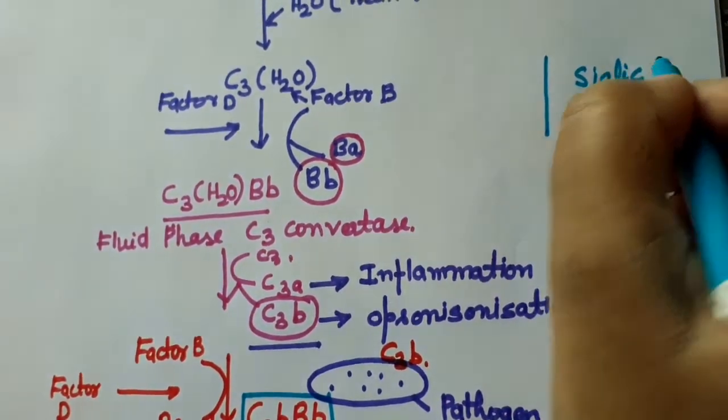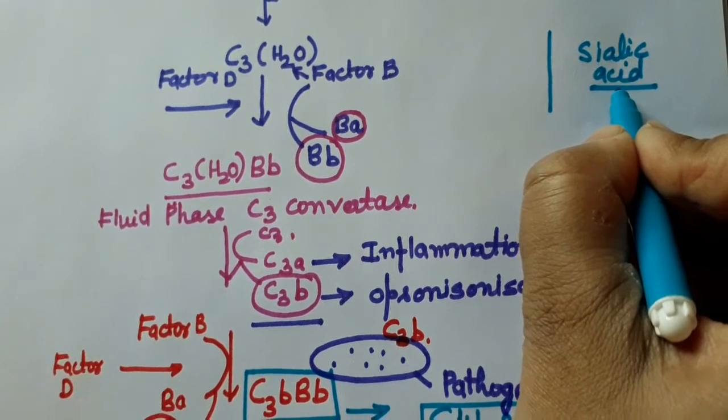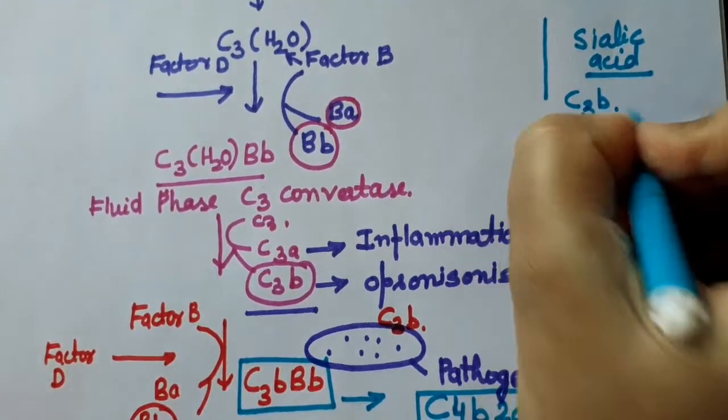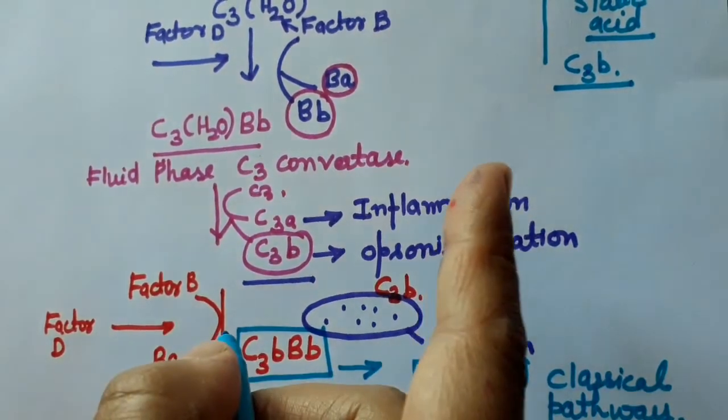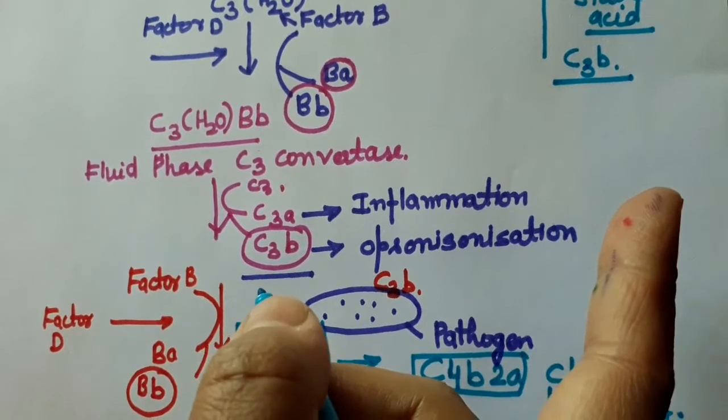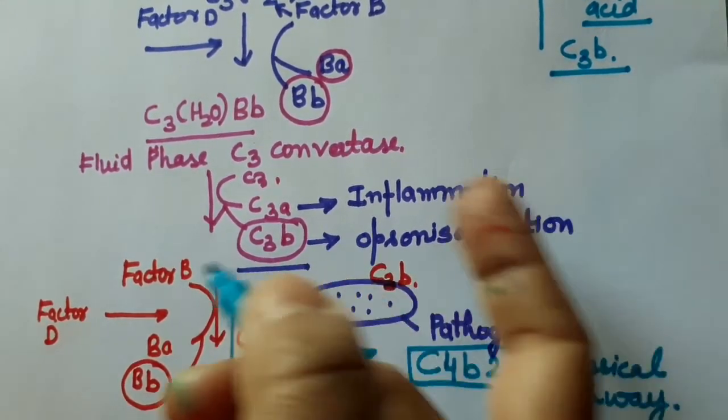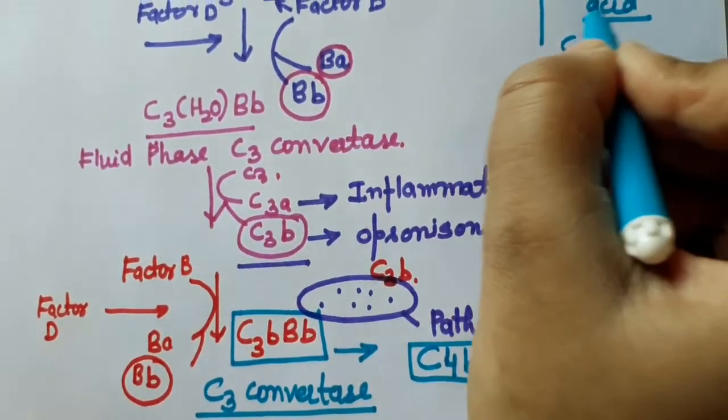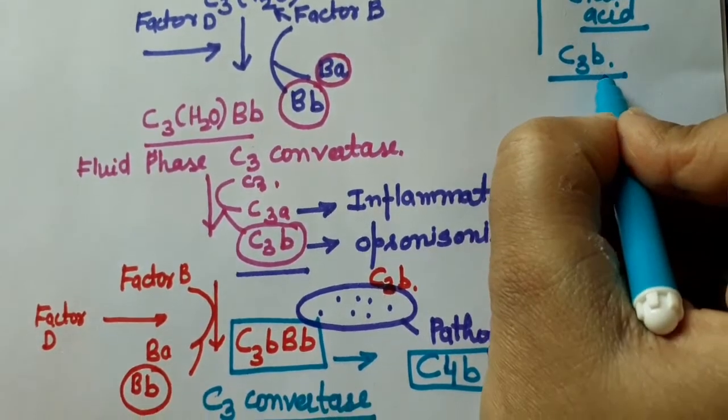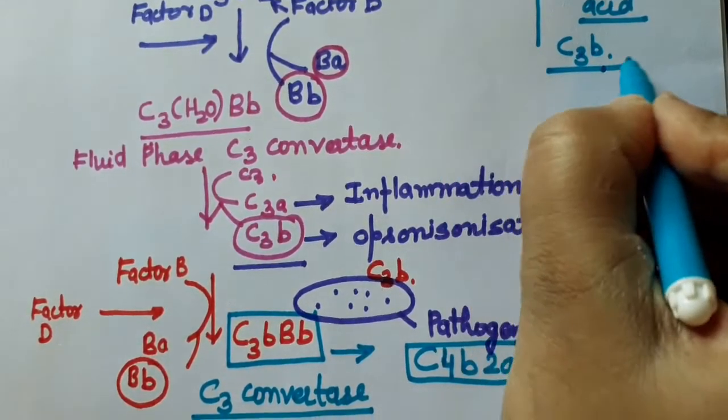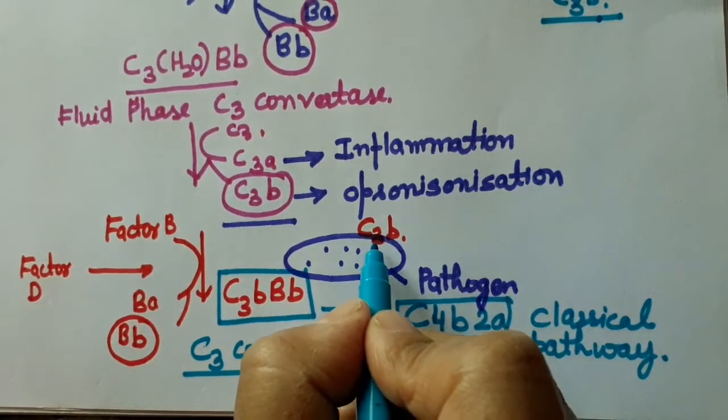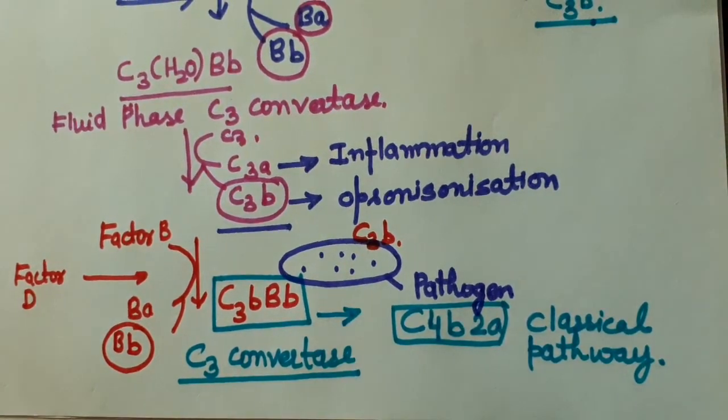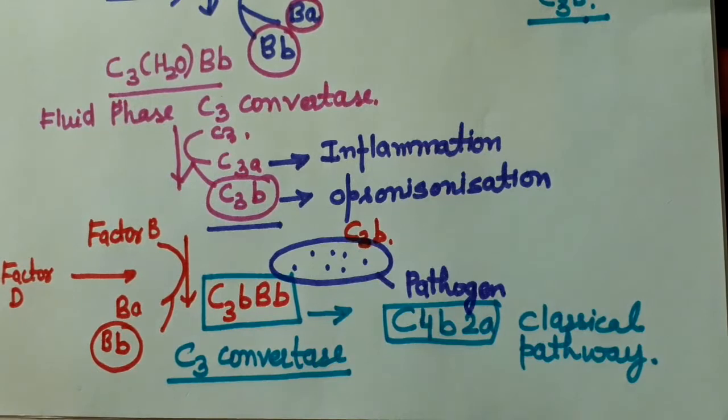This sialic acid has high concentration in mammalian cells. Due to its high concentration, inactivation of C3B takes place. But in case of foreign cells like bacteria and viruses, they have very low concentration of sialic acid. In that case the C3B is not inactivated and it binds to the surface of the pathogen. But in our case high concentration causes the inactivation of C3B.